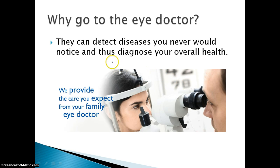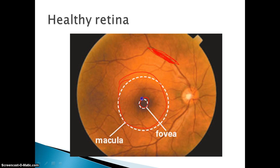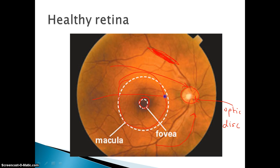Now why do we go to the eye doctor? Going to the doctor takes a while, but they can detect diseases that you never would notice, and thus diagnose your overall health. When you go to the eye doctor, they are actually looking at the back of your eye — at all the arteries and veins back there. Here we have a healthy retina: you can see our macula where the image is projected, our fovea centralis, and our optic disc off to the side. A healthy eye has healthy blood vessels and a nice healthy red color.